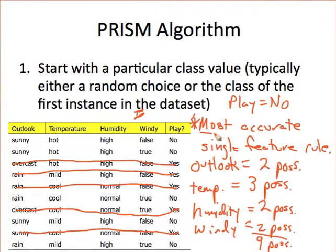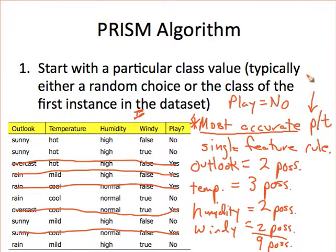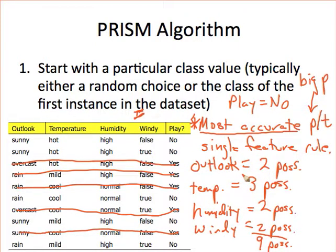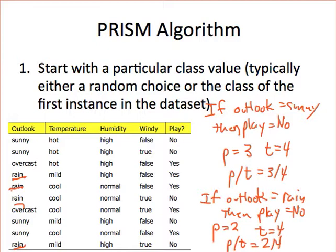We want to keep the rule with the highest accuracy — that's the number of positive examples divided by the cover. If multiple rules share the same accuracy, the tiebreaker is that we want P to be as large as possible. For example, if two rules are both 75% accurate but one has six positive examples and another has three, we keep the one with six because it applies to more instances — we get the most bang for our buck. If accuracy and P are both tied, we make a random choice.